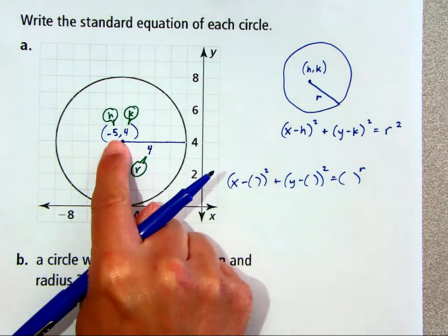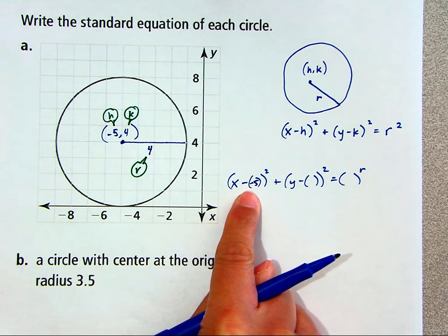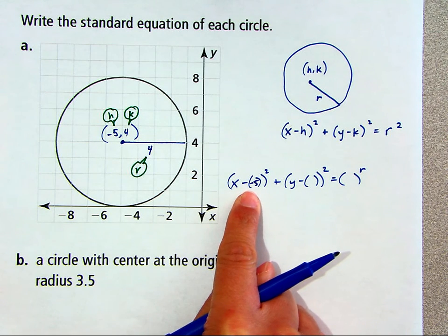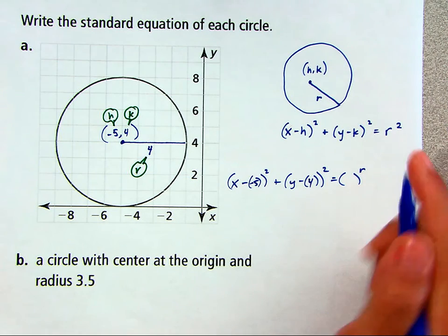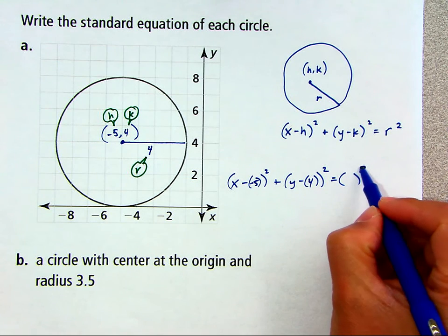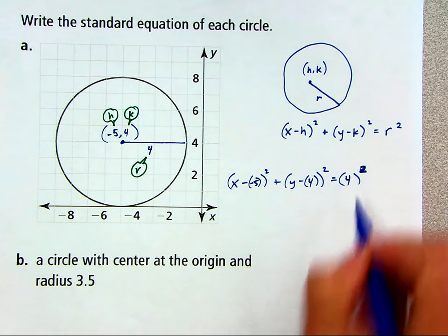The h value was negative 5. So I did that because now you'll see we have two negative signs. The k value is 4. I don't know why I put r there. It should be 2 squared. The radius is 4.